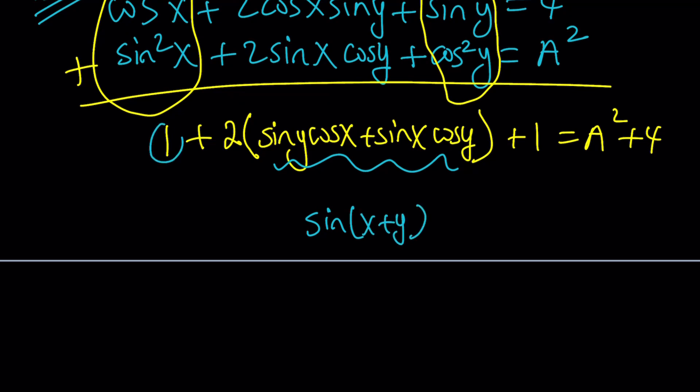Now, notice that the expression inside the parentheses is actually sine of x plus y. This is the sum formula. Now, we have 1 plus 1, which is 2. We can subtract it from 4, and we get a 2. So, this times 2 equals a squared plus 2. 4 minus 2 is 2, right?